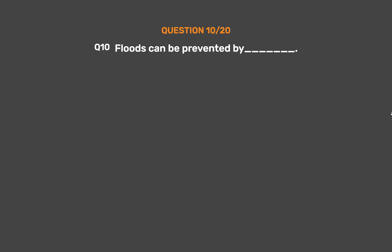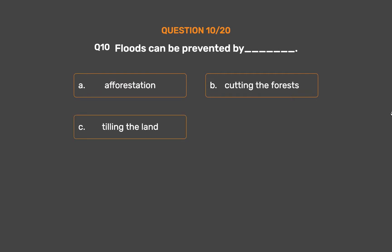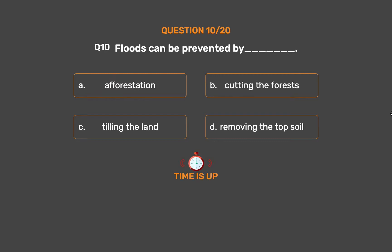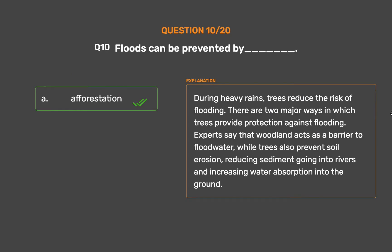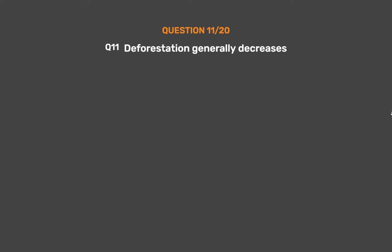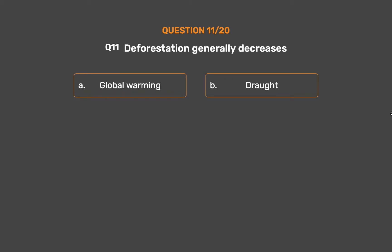Question number ten: floods can be prevented by underscore. Option A: afforestation. Option B: cutting the forests. Option C: tilling the land. Option D: removing the topsoil. The correct answer is option A, afforestation. During heavy rains, trees reduce the risk of flooding. There are two major ways in which trees provide protection against flooding: woodland acts as a barrier to flood water, while trees also prevent soil erosion, reducing sediment going into rivers and increasing water absorption into the ground.